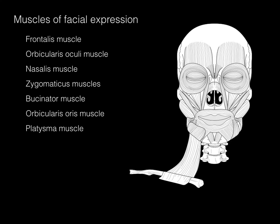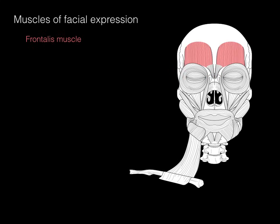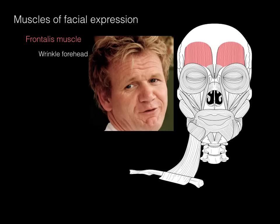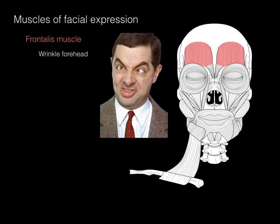We're going to cover not every muscle of facial expression, but the ones listed on the left using this black and white illustration, because these are ones that will help you understand clinical testing of the facial muscles. First is the frontalis muscle, receiving its name because it's right along the frontal bone. This muscle, when it contracts, wrinkles the forehead — as you see with some angry chefs, childhood actors, and some funny British comedians.